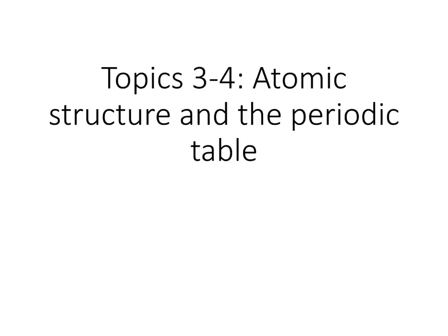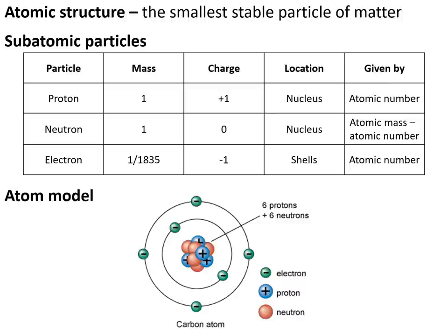Topics 3 to 4: atomic structure and the periodic table. Atoms are the smallest stable particle of matter, and they're made of subatomic particles. Protons have a mass of 1, a charge of plus 1, are found in the nucleus, and are given by the atomic number. Neutrons have a mass of 1, a charge of 0, are also found in the nucleus, and are given by the atomic mass take away the atomic number.